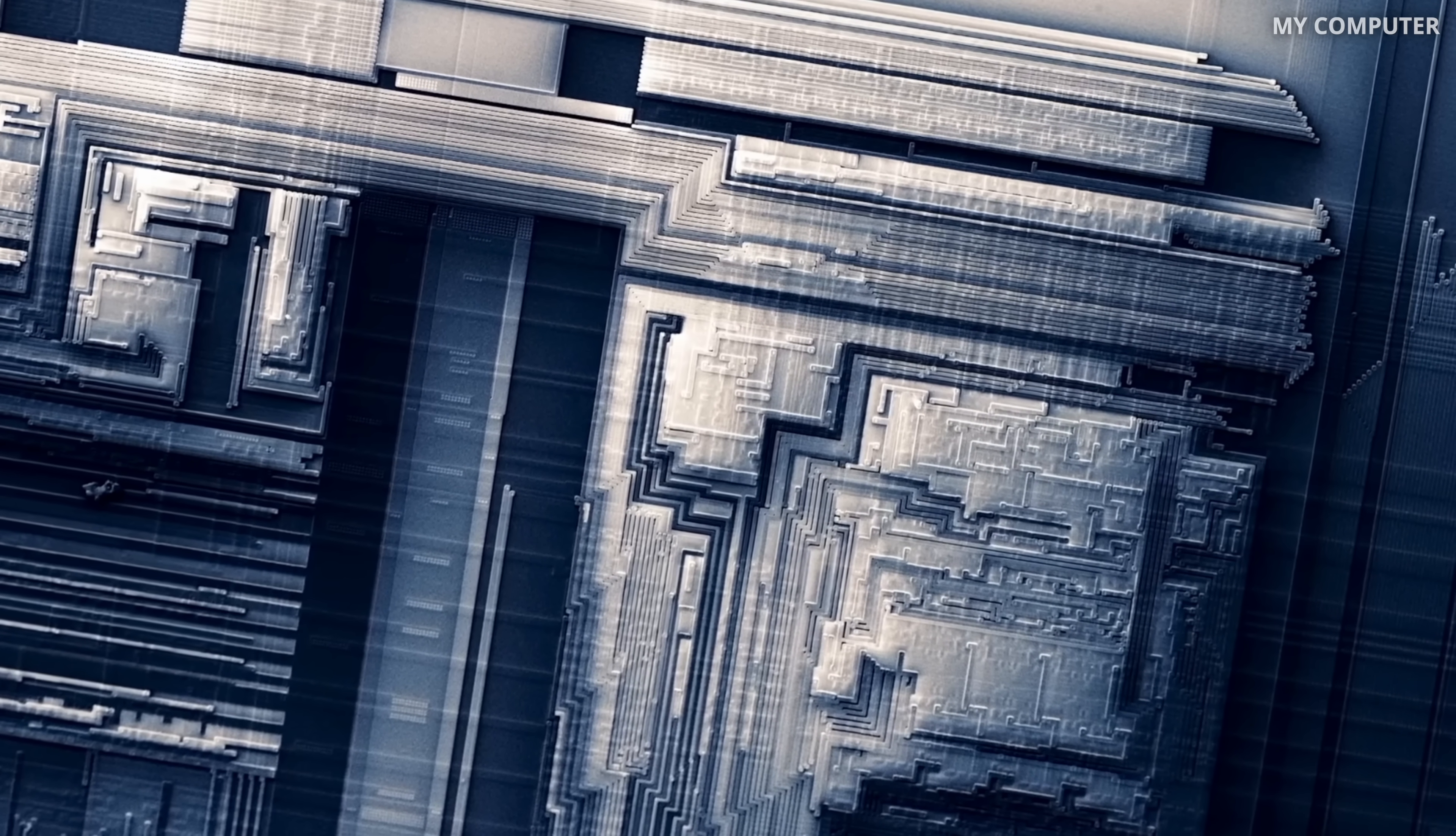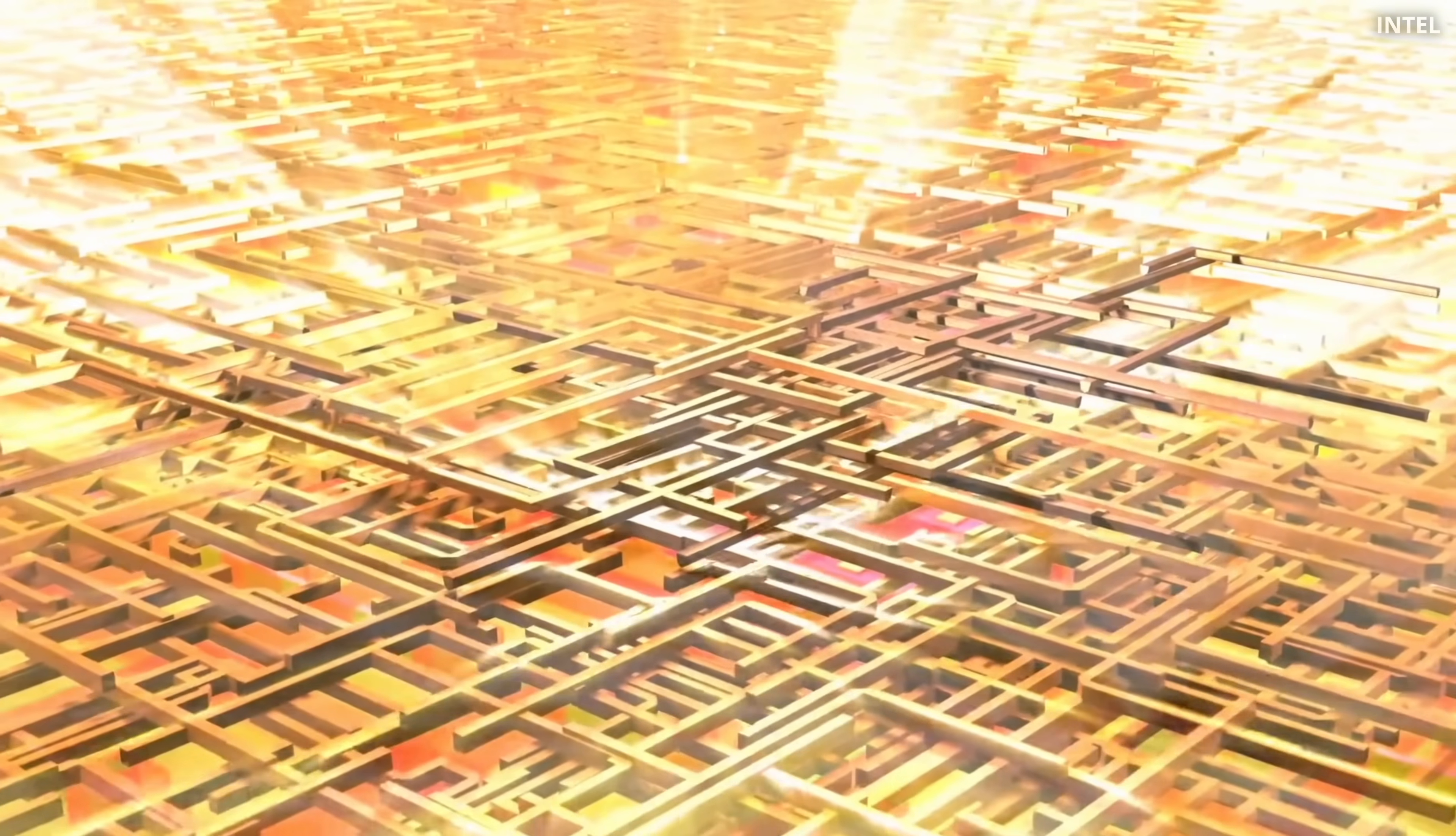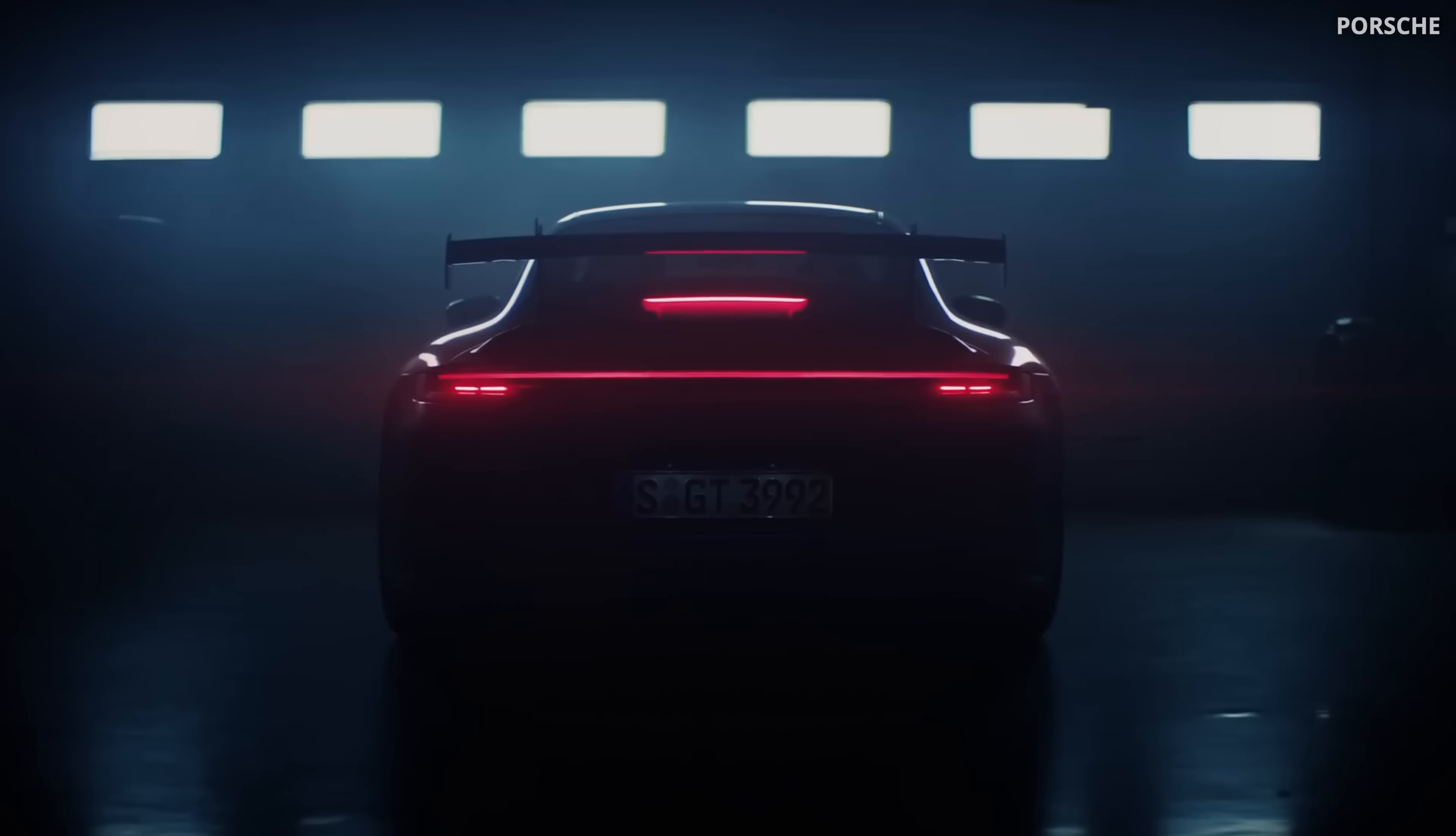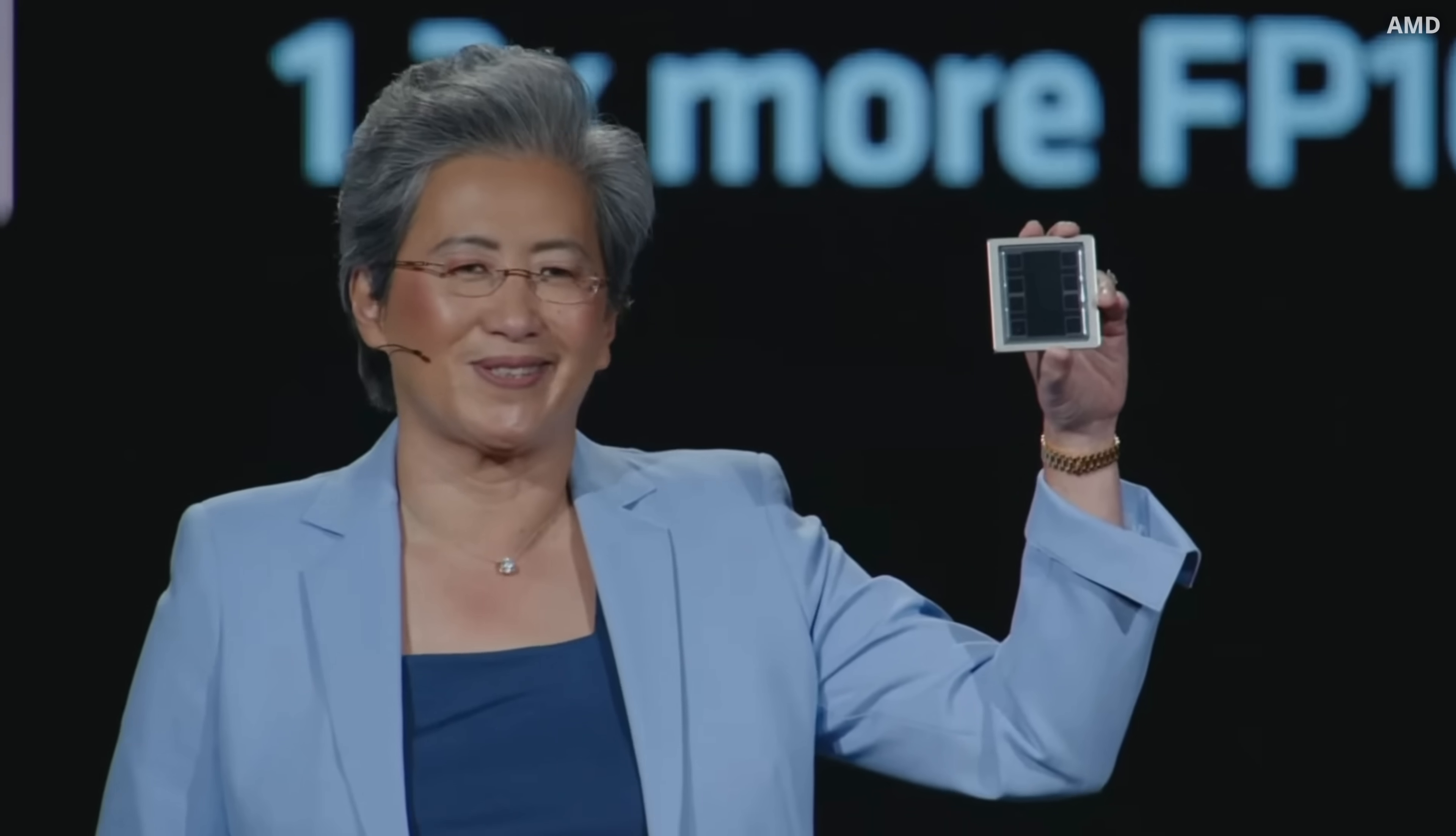As we cram more and more transistors onto chips, the wires made of copper are getting so thin that resistance shoots up, heat builds up, and everything slows down. You can think of it like driving a Porsche 911 GT3 RS, which stands for really serious. You know, the one that Lisa Su drives?